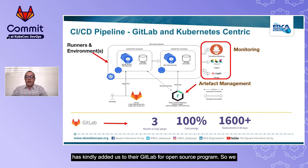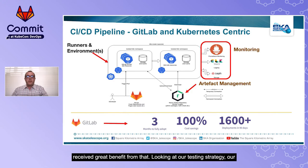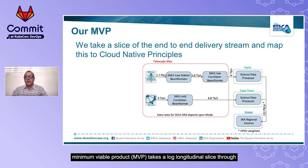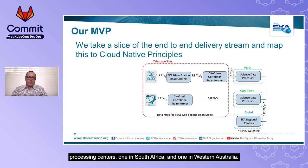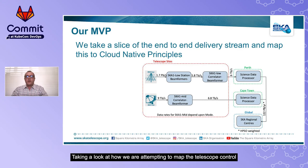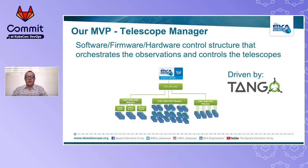Looking at our testing strategy, our minimum viable product takes a longitudinal slice through the entire system from data acquisition to image product delivery. We keep things common as much as possible between the two telescopes so as to maximize component reuse. Our two telescopes have regional data processing centres, one in South Africa and one in Western Australia.